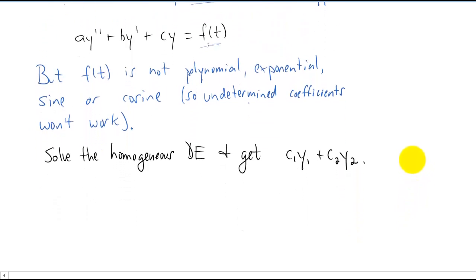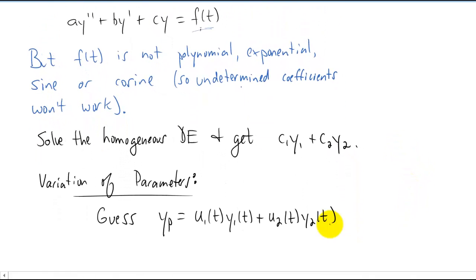Here's the new part. With variation of parameter, we're actually going to guess a particular solution of this form. And this looks really ugly. The y1 and the y2 are exactly the y1 and the y2 that we found that we know from the homogeneous differential equation.